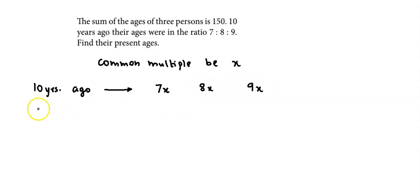So their present ages will be, if we talk about present ages 10 years after that, the ages will be 7x plus 10, then second person's age will be 8x plus 10, and third person's age will be 9x plus 10.